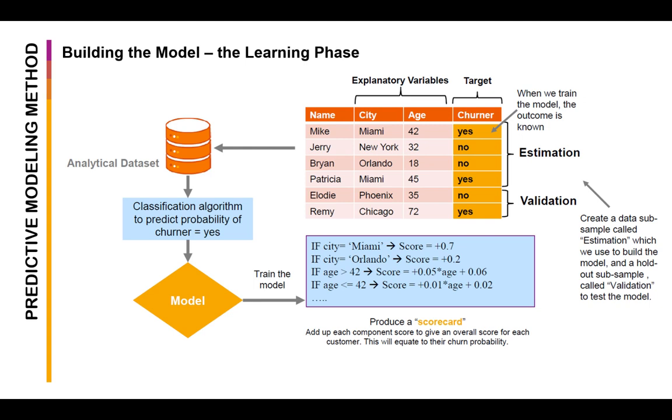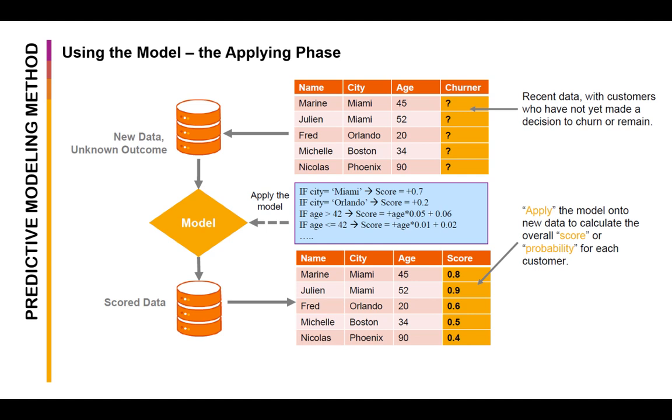The output of this model may be a scorecard which lays down the scores or weights of each value, and then the overall score equates to the churn probability. Now in applying this model, we have a new dataset which is currently unlabeled whether they will churn or not. We apply the model, we run it through the dataset, and then it provides us a score of each of the customers depending on their explanatory variables.